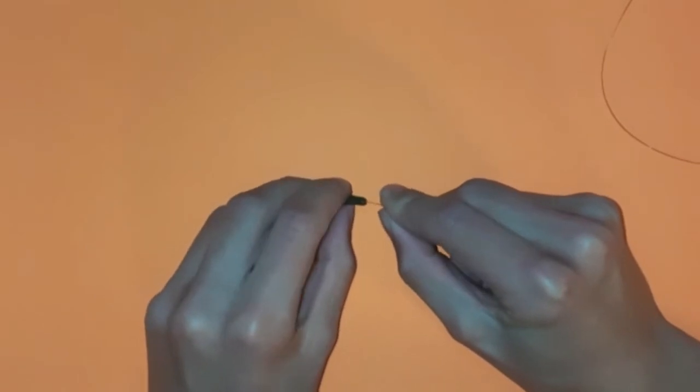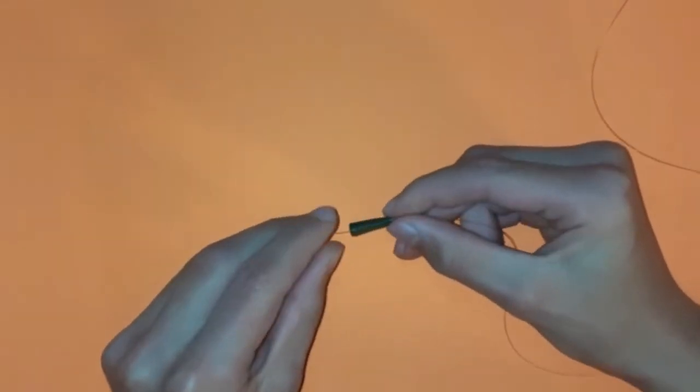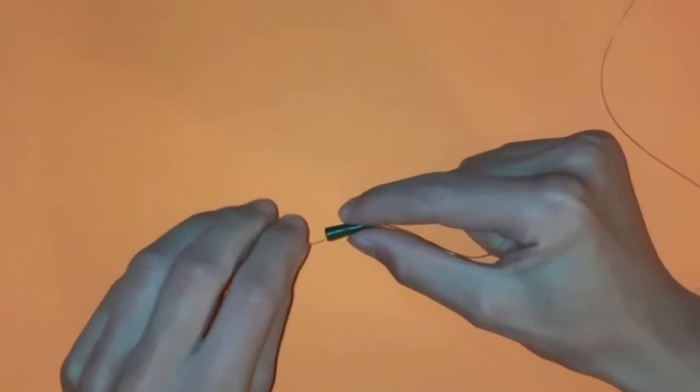First, you are going to want to put your tail rubber onto your main line. Make sure that you can slide this along your line.